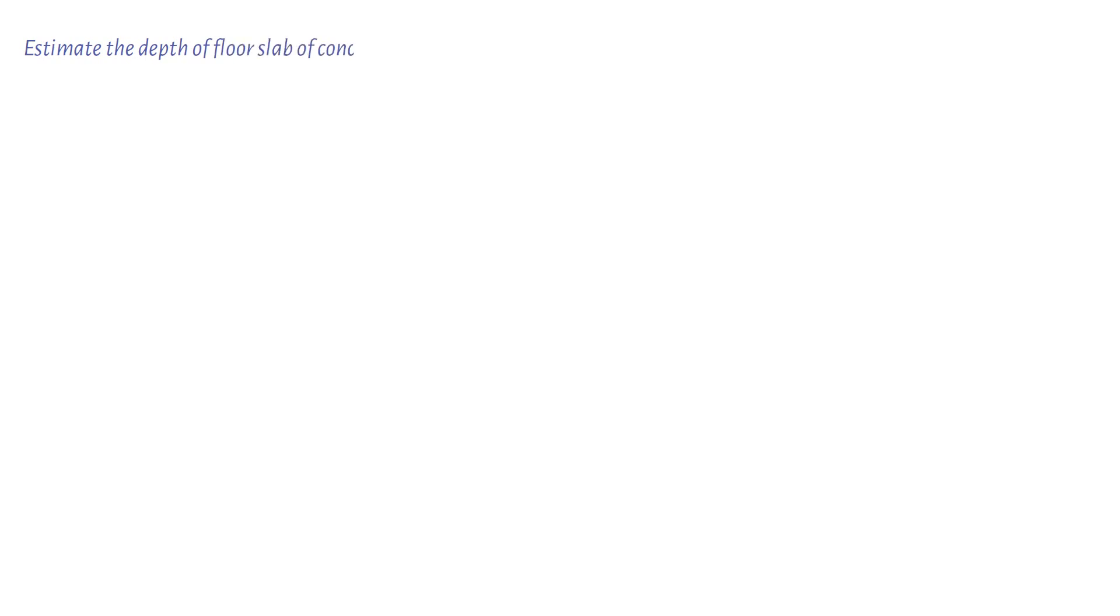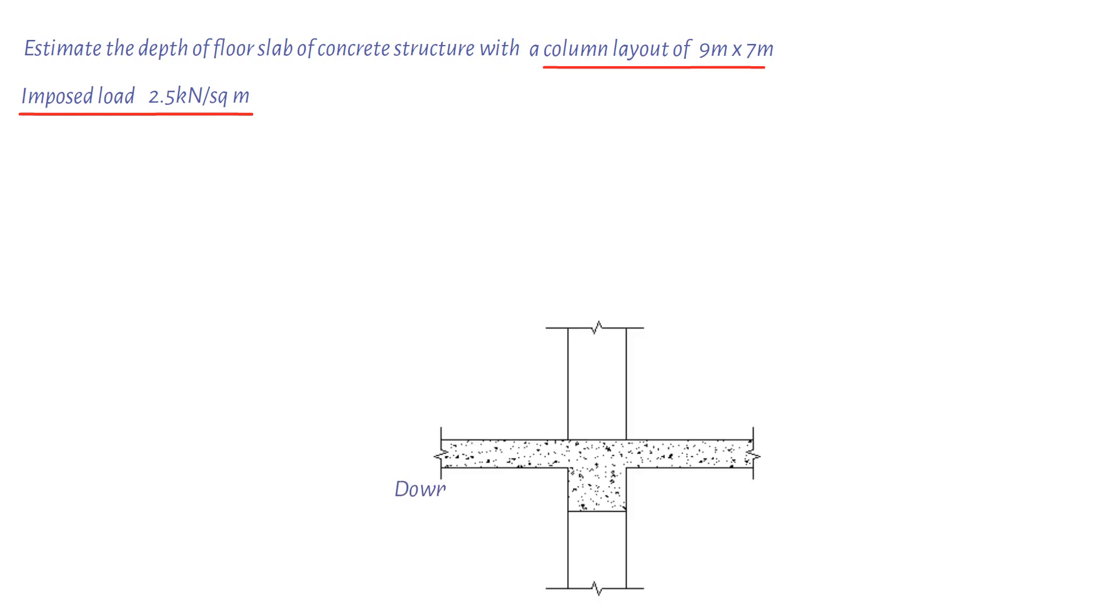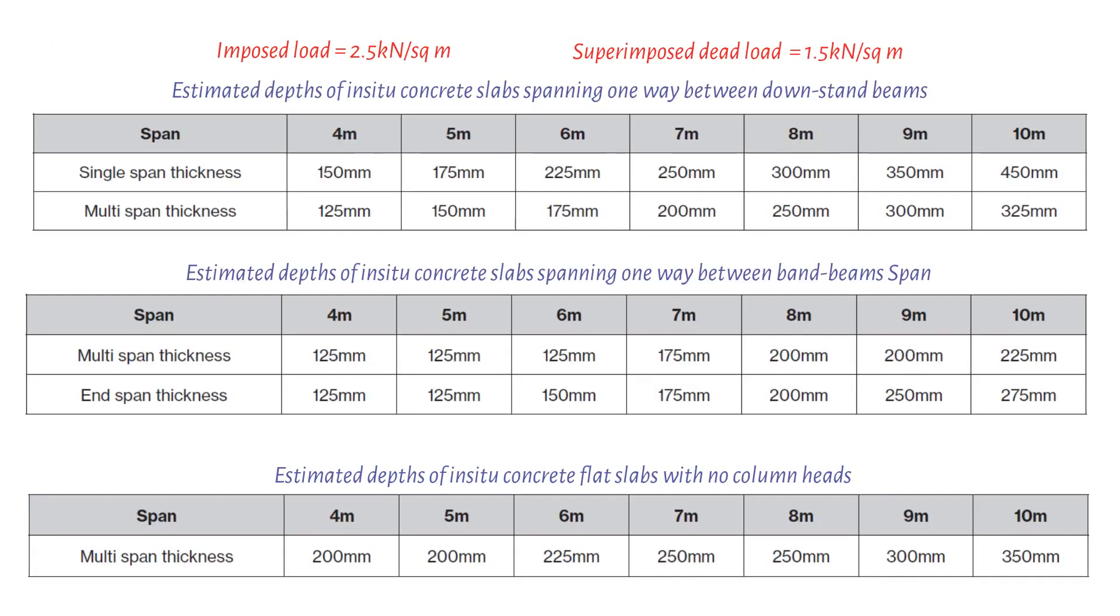Let's take a worked example. Estimate the depth of floor slab of a concrete structure with a column layout of 9 meters by 7 meters, supporting an imposed load of 2.5 kilonewtons per square meter, if a downstand beam and a flat slab structural solution were adopted. Also, for the downstand beam structure, find the estimated beam depth for a 600 millimeters wide beam.